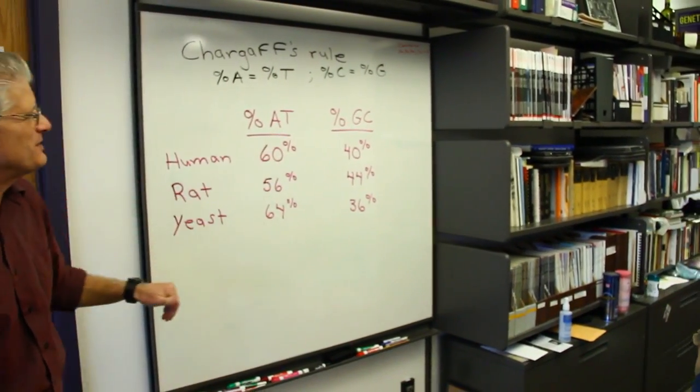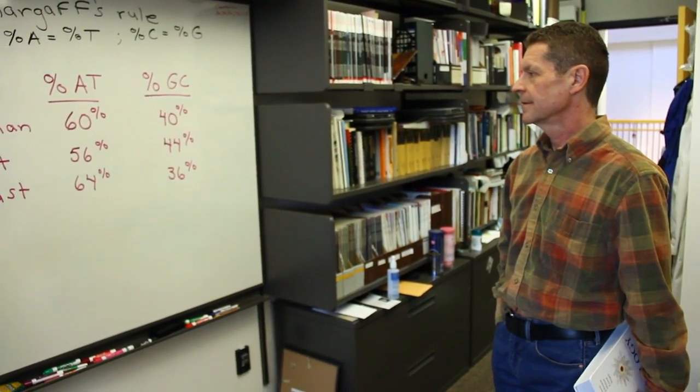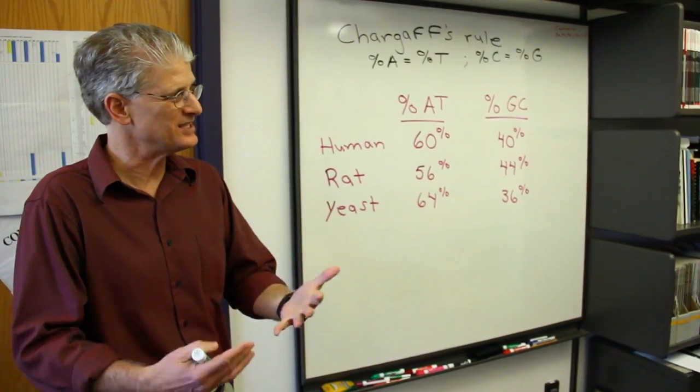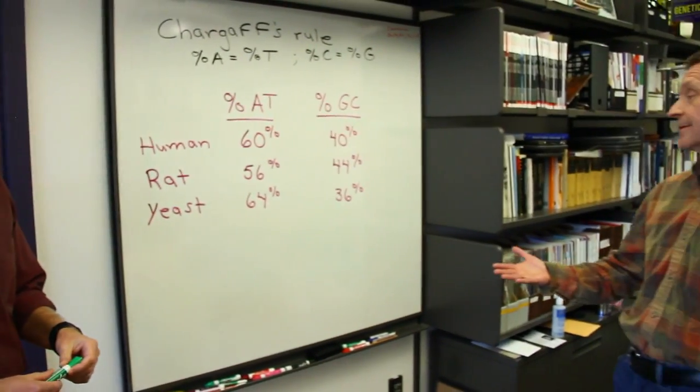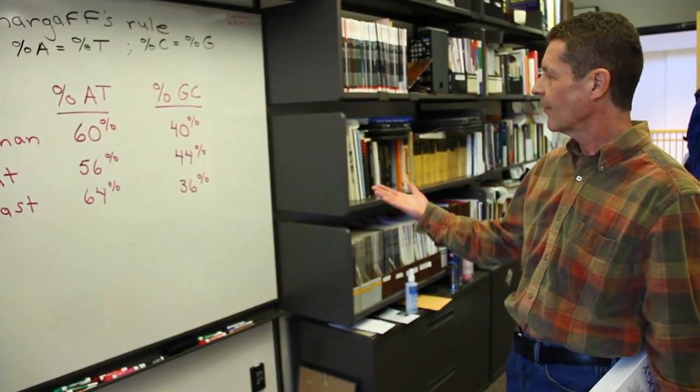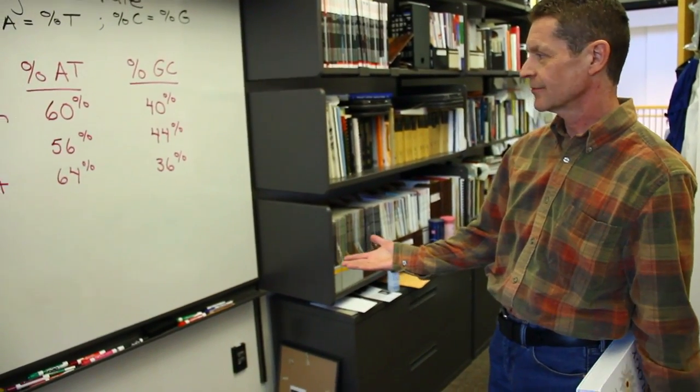It doesn't have to be uniform, and in fact, the fact that it differs between species actually lends some credibility that DNA is genetic information, that there is a bit of difference between different species. Well, that makes sense. So it could vary, but why would it ever vary? Why would it go between different amounts of G and C or A and T? Is that just random?